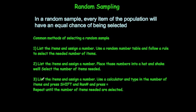Finally, list the items and assign them a number, then use a calculator — type in the number of items in the population, press shift and the random button, then press equals. Keep doing that to select the number of items needed.